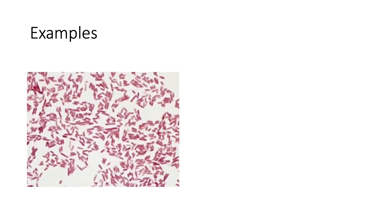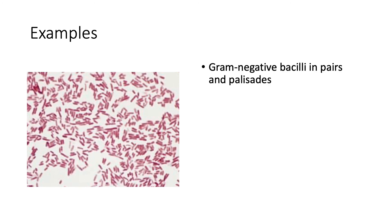Now let's take a look at the next example. How would you characterize or report this? You can pause here. If you answered gram-negative bacilli in pairs and palisades, you would be correct. As you can see in this figure, there is no clear single arrangement. Some of the bacilli are arranged in pairs, while others are arranged in palisades. In these cases, it would be better to report both arrangements.